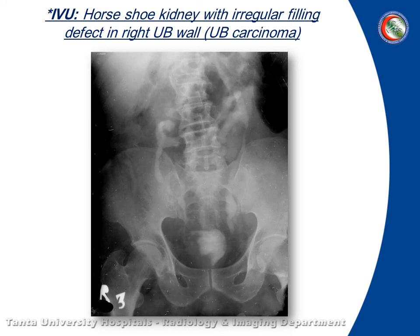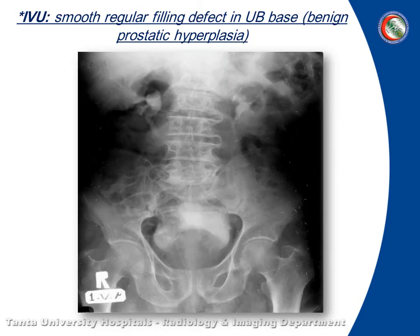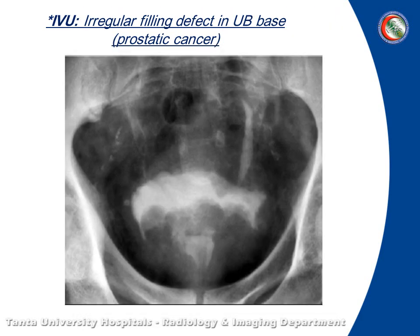Here, a horseshoe kidney with a regular outline filling defect at the base and right lateral wall of the urinary bladder. Here is a smooth filling defect at the base of the bladder, likely due to benign enlargement of the prostate. While here, the filling defect is irregular and lobulated, likely malignant enlargement of the prostate.